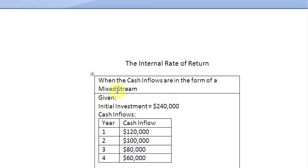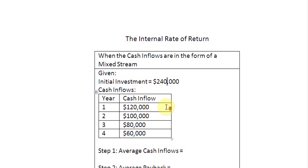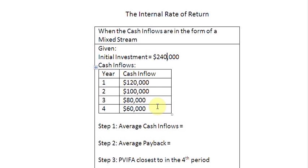For that purpose, we have some numbers here. We have an estimate of initial investment — $240,000 has been invested in a project, following which the project is returning these numbers in the next four years. If you look at these numbers, you will realize that this is a mixed stream of cash flows.